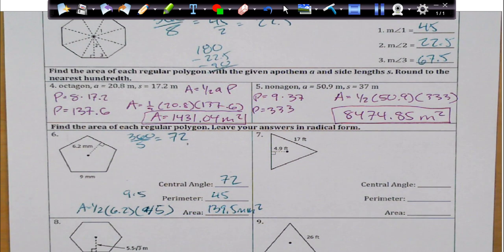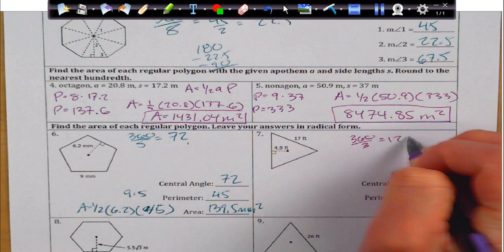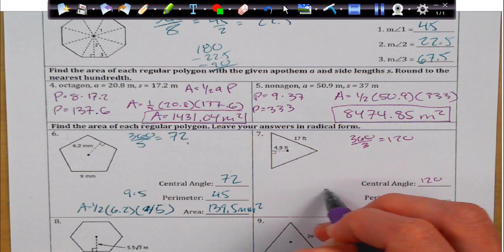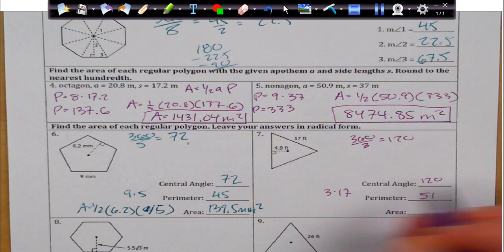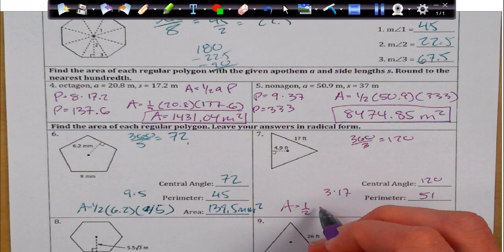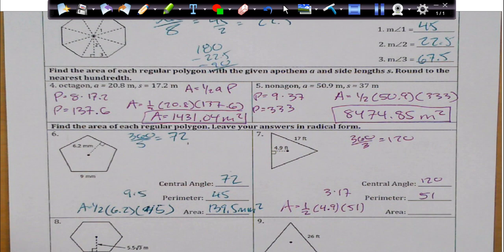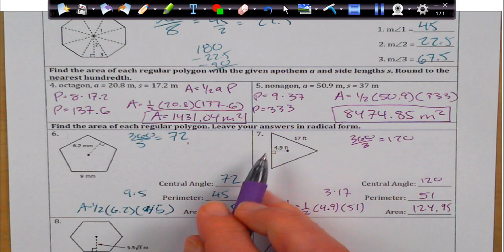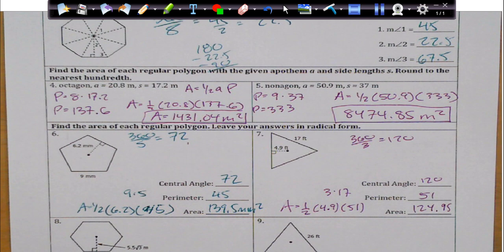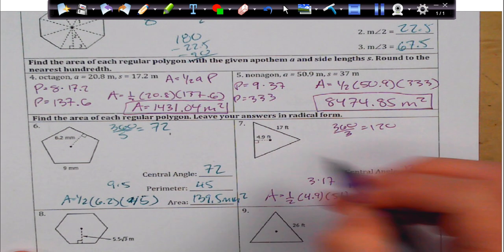We're also given the apothem on this one. We're going to find our central angle, which is 360 divided by 3, which is 120. My perimeter, that's just going to be 3 times 17, which is 51. So, my area is going to be 1 half of my apothem, which is 4.9, times my perimeter of 51. And that is going to be equivalent to 124.95. It does say leave your answer in radical form. We're not quite to problems that have radical form yet, so that's why none of these are in radical form. Just FYI. And that's in square feet.